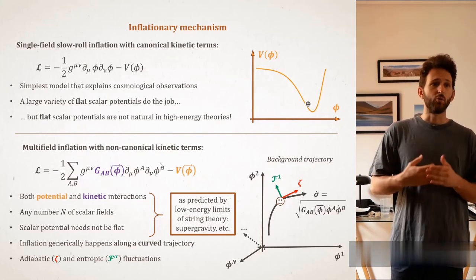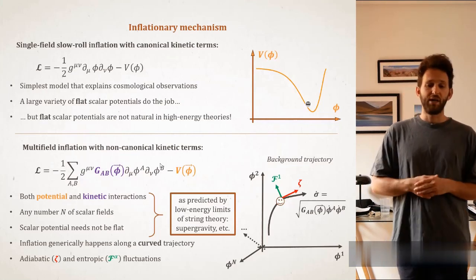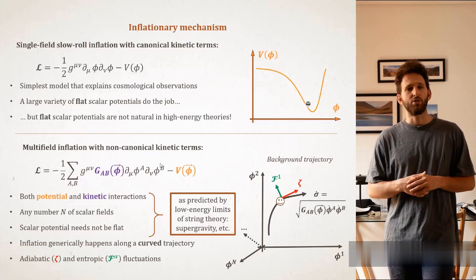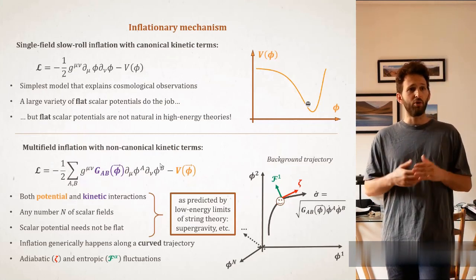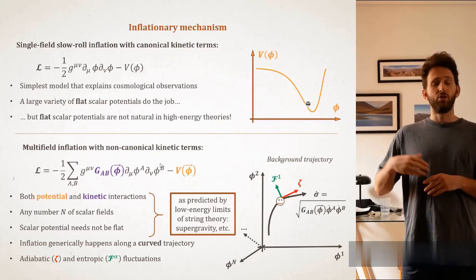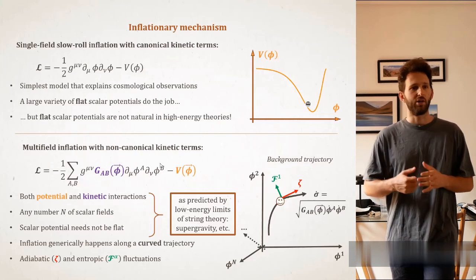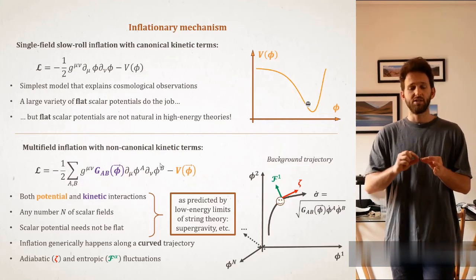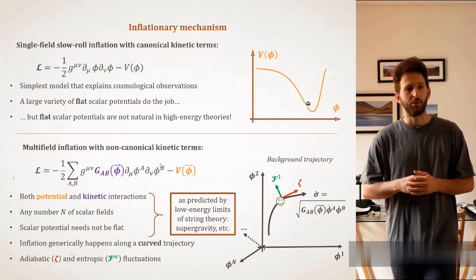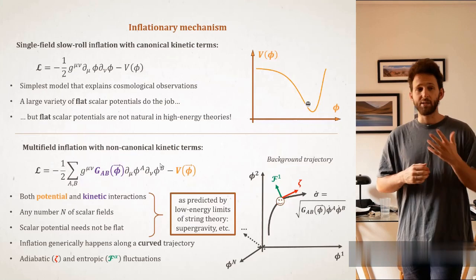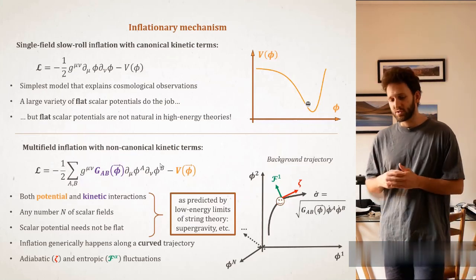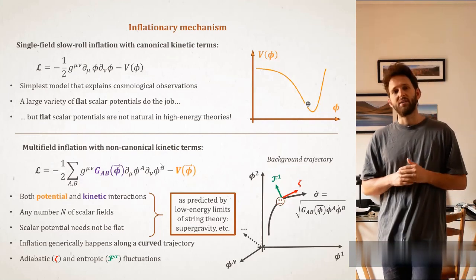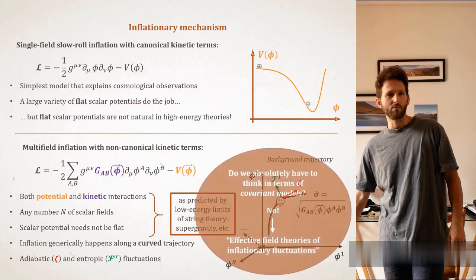Multifield inflation, on the contrary, and in particular with non-canonical kinetic terms, as described by this field space metric G_AB in purple here, are encountered in particular realizations of those high-energy theories. With any number of scalar fields, and both potential and kinetic interactions, the scalar potential need not be flat, which is again preferred by these theories. Inflation, in that case, generally happens along a curved trajectory in the field space, simply because you have more than one degree of freedom for inflating. We therefore have to define not only the adiabatic fluctuations, but also the entropic ones. The adiabatic fluctuation is the one that is instantaneously parallel to the background trajectory, while the entropic ones are the ones that are perpendicular to this background trajectory.